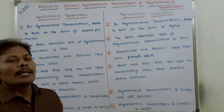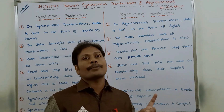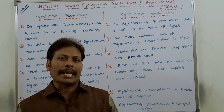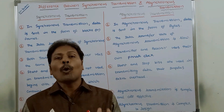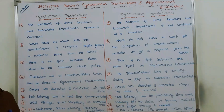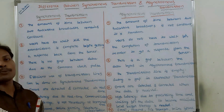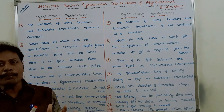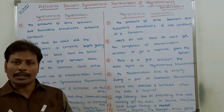Sixth point: in synchronous transmission, the amount of time between two successive transmissions is always constant. That means the time interval between two data transmissions remains constant in synchronous transmission.